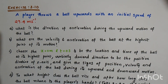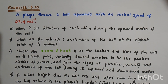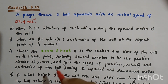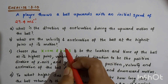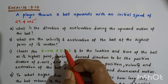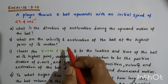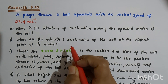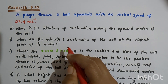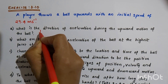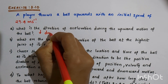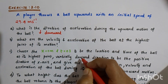Part A: What is the direction of acceleration during the upward motion of the ball? Irrespective of the direction of motion of the ball, the acceleration is actually the acceleration due to gravity, because the ball is in free fall motion. Acceleration due to gravity always acts in the vertically downward direction, that is towards the center of the earth. So the direction of acceleration during the upward motion is downward.